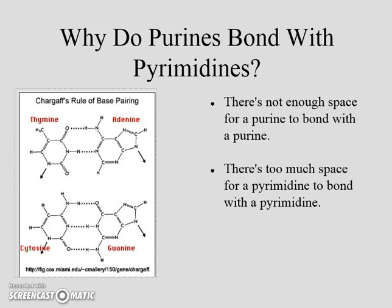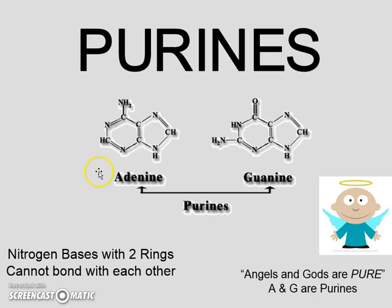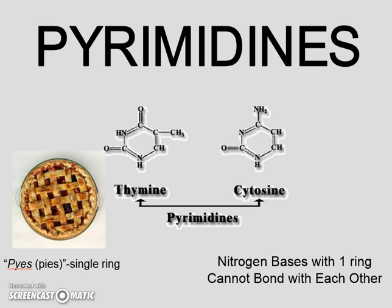A quick mnemonic to remember which category each base belongs to: A and G are purines — think 'angels and gods are purines.' And for pyrimidines, think pie — cherry pie, apple pie. Pies have one ring. So T and C, the ones that only have one ring, are the pyrimidines.